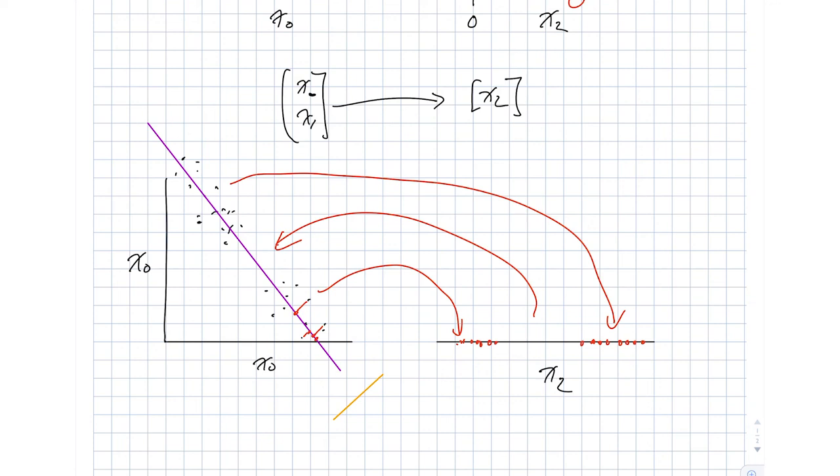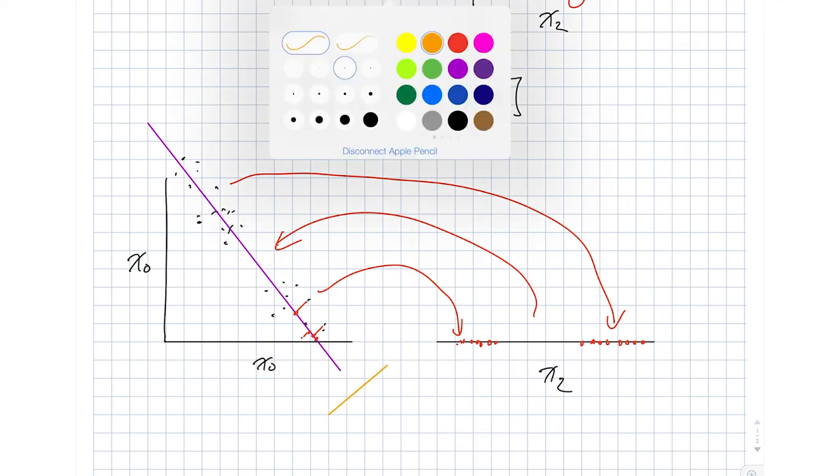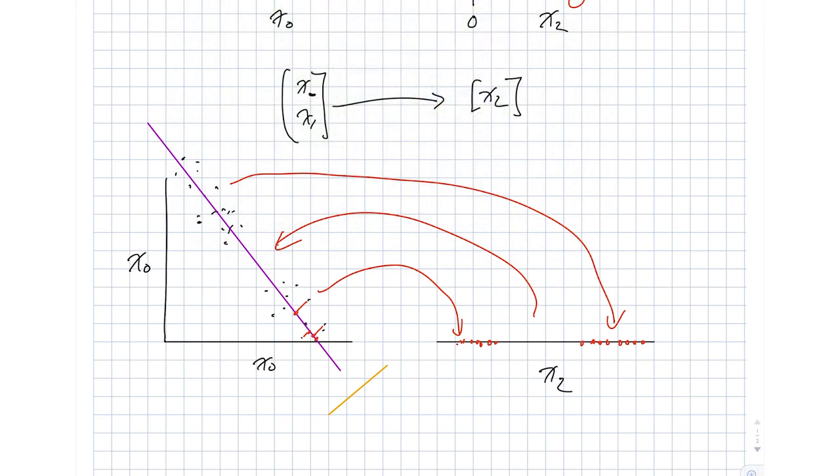So that orange is perpendicular to our purple. And now imagine taking each of these points and dropping it onto the original, down to the orange point.